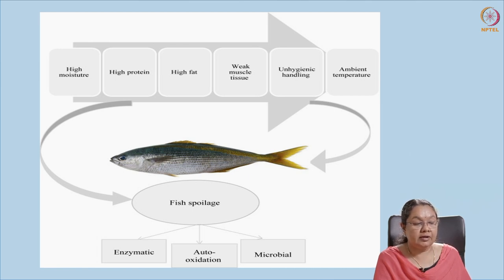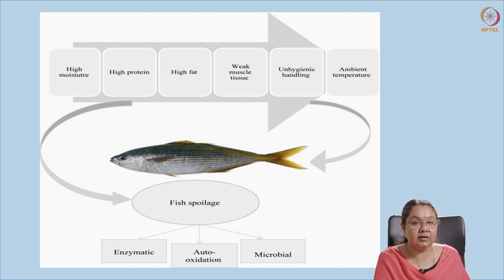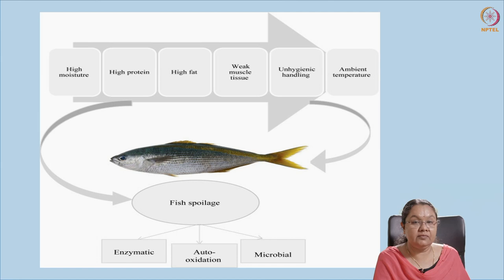The arrow indicates that temperature is the most important factor, though moisture is also important for microbial growth. By modulating the water content we can control moisture and thereby control microbial growth. But if the temperature is appropriate, it is very hard to control microbial growth. Unhygienic handling is also a critical factor, so while handling the fish the person should be very careful — the hands should be cleaned and washed properly so that there is no contamination from the handler to the animal.